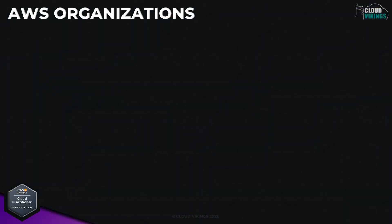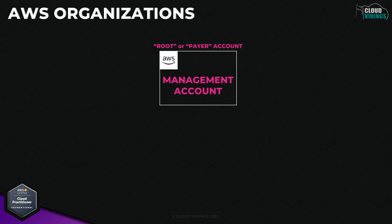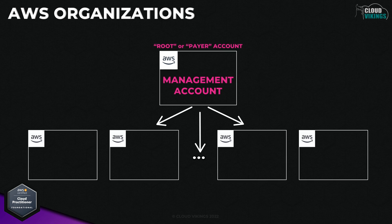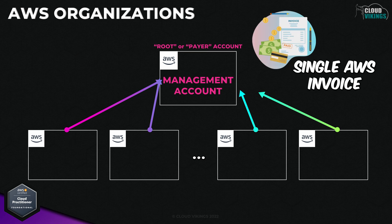For a visual example, you'd have this one main payer account set up as your root level account for your AWS organization. Then other child level accounts get linked to this root account as part of the organization structure. From a billing perspective, the AWS usage costs for all the child accounts get consolidated to that one root level account, so you get one invoice to pay regardless of how many child accounts are linked.